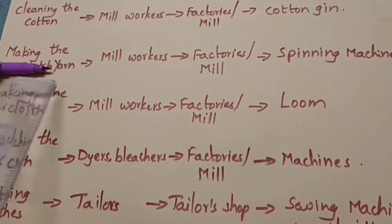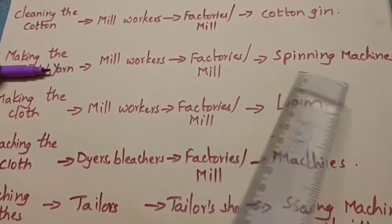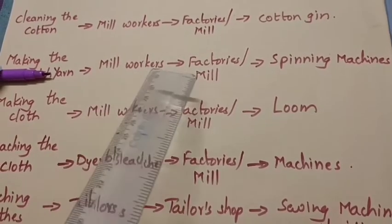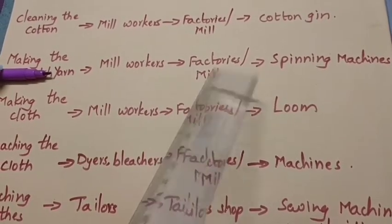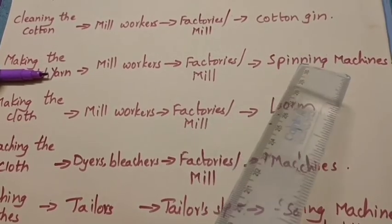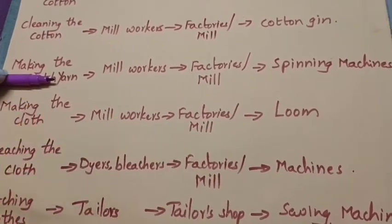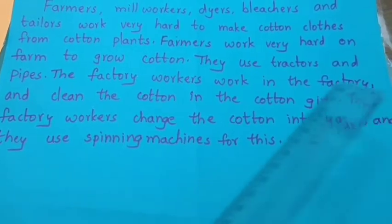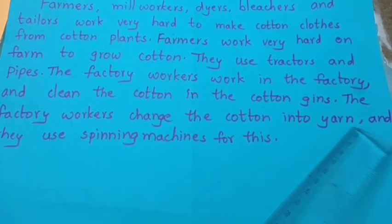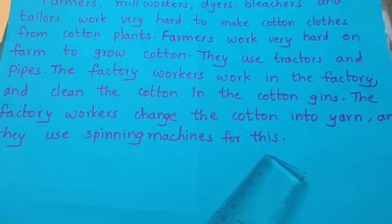Now the third detail is making the yarn. The people are mill workers, the place is factories or mills, and the tool is spinning machines. So the sentence is: The factory workers change the cotton into yarn, and they use spinning machines for this.